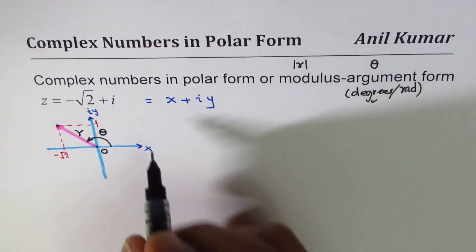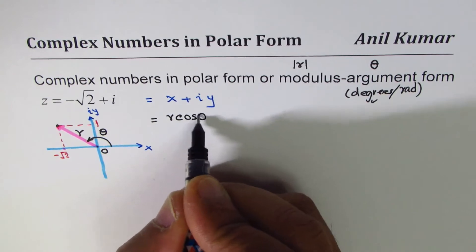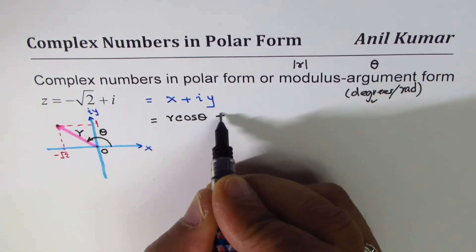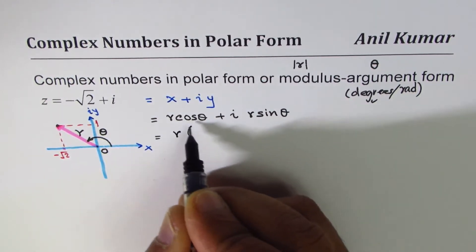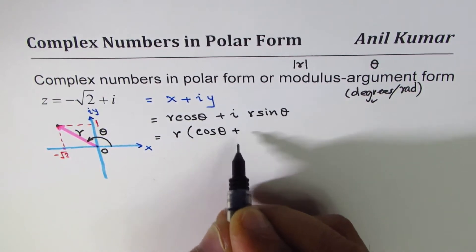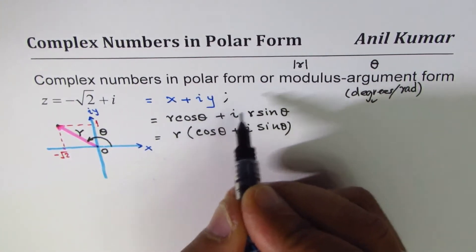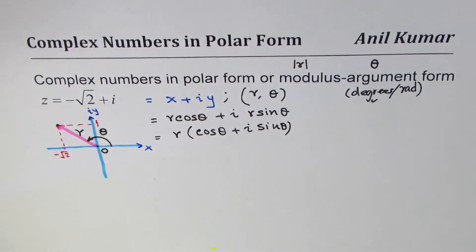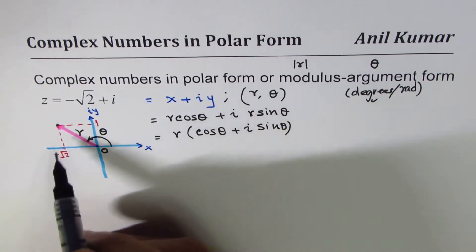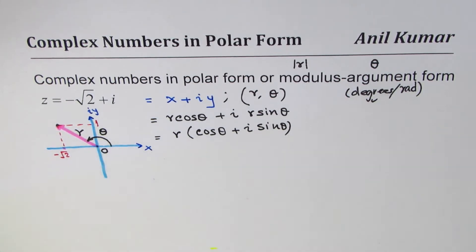In polar form, x can be written as r cos theta — r is the hypotenuse of the triangle — and y as r sin theta. Taking r as a common factor gives us r times the quantity cos theta plus i sin theta. We can also write this in coordinates as (r, theta), meaning r units away at a counterclockwise angle theta. It could be in degrees or radians.